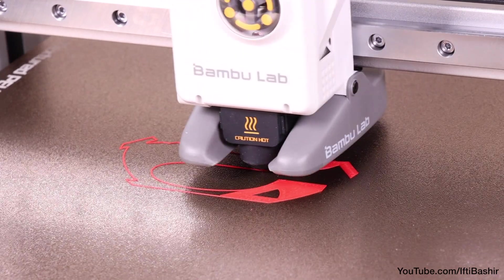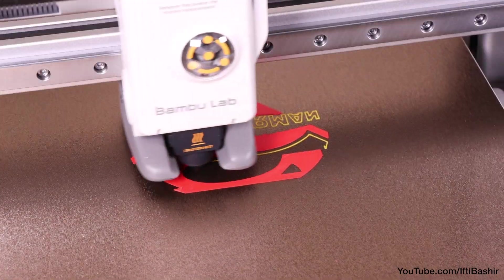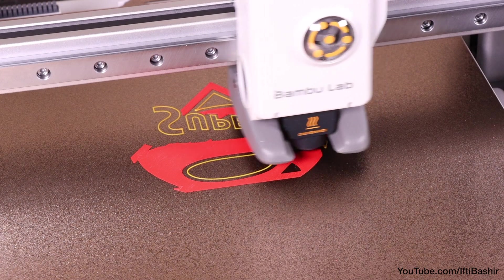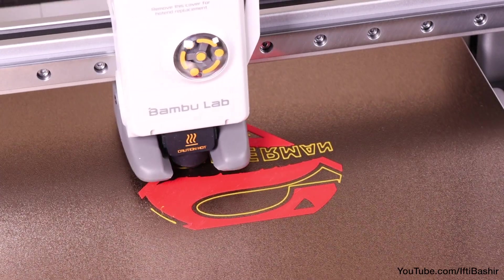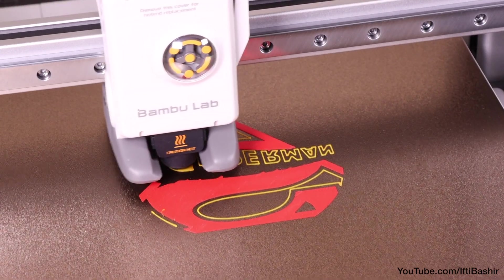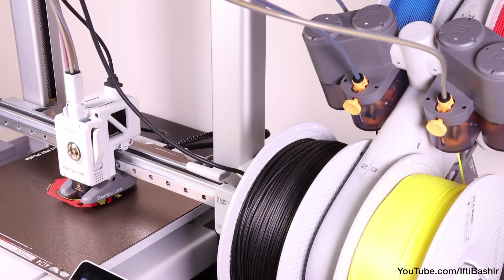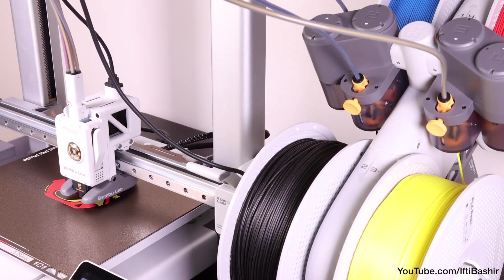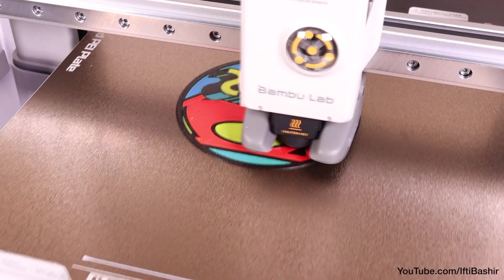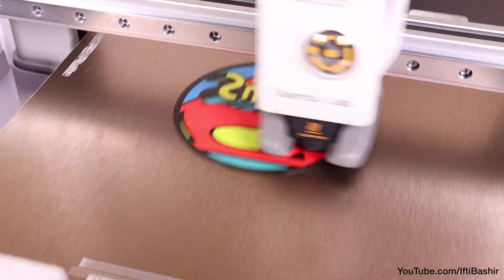So while we've seen the A1 is a good printer on its own it's the AMS light system that elevates the whole setup to a near perfect product. It feels almost completely plug and play in a way that so few printers have done before. Nothing comes close to the ease of use that comes from these two machines working in tandem.